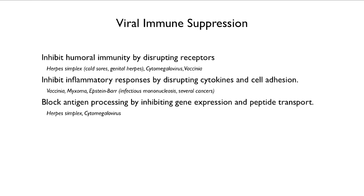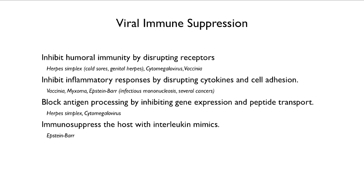Herpes simplex and cytomegalovirus block antigen processing by inhibiting gene expression and peptide transport. The Epstein-Barr virus immunosuppresses the host by producing molecules that mimic interleukins — the molecules that send signals between cells to mediate the immune response.